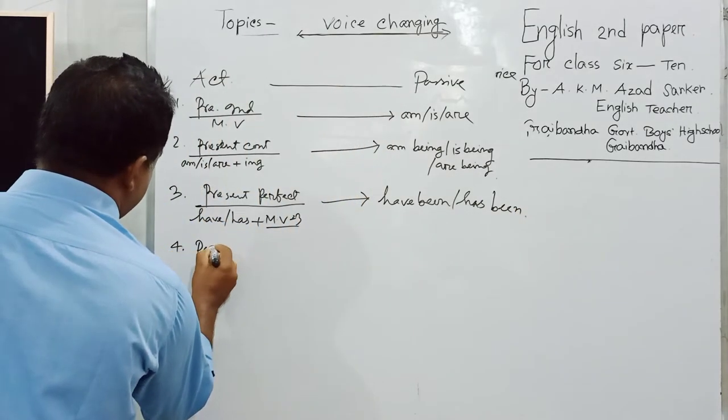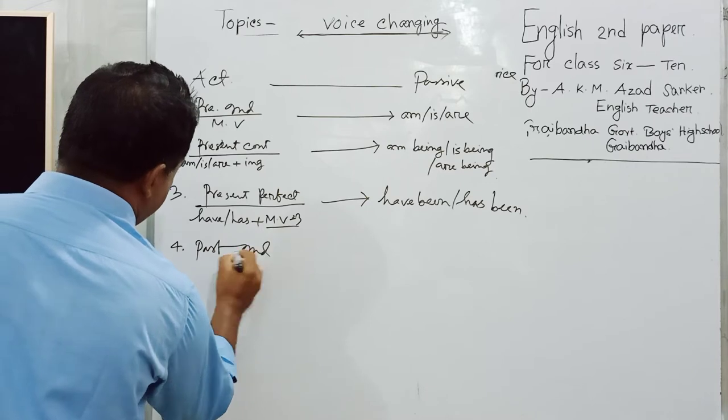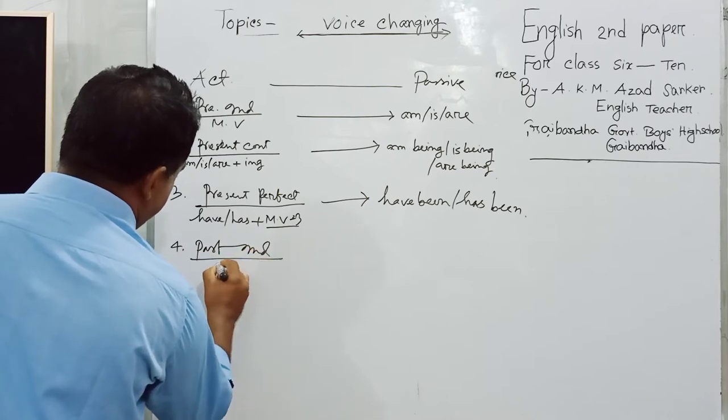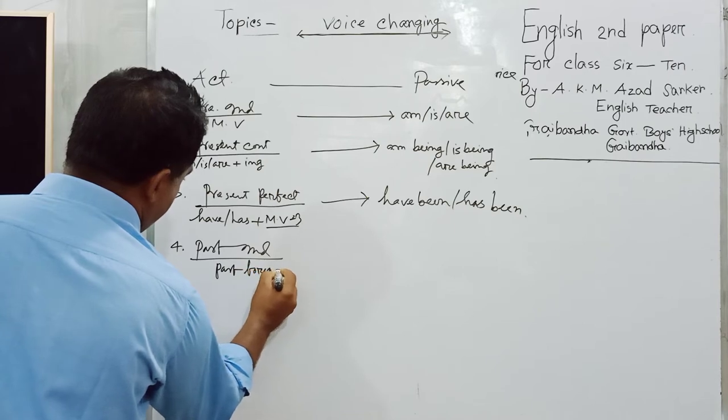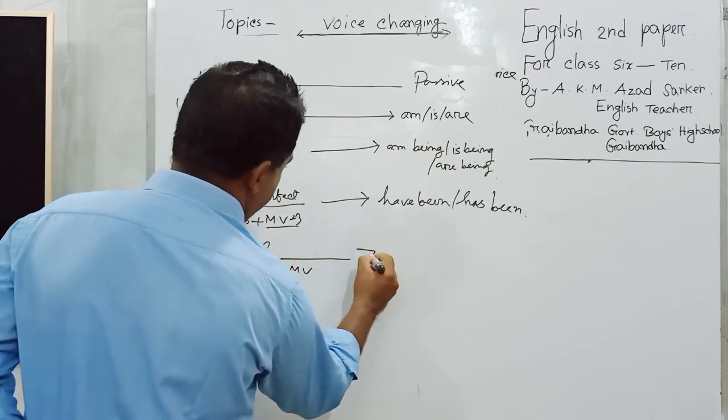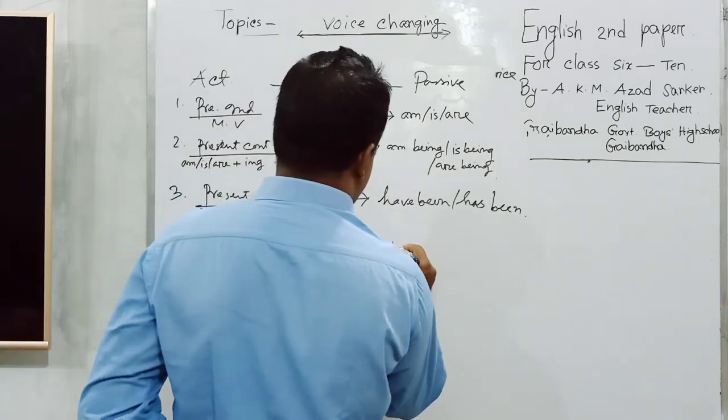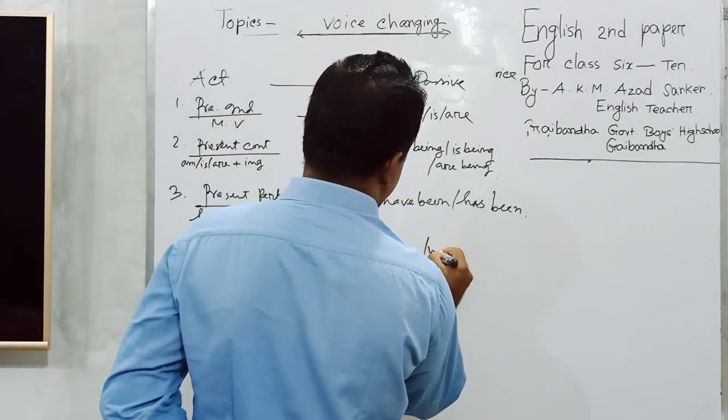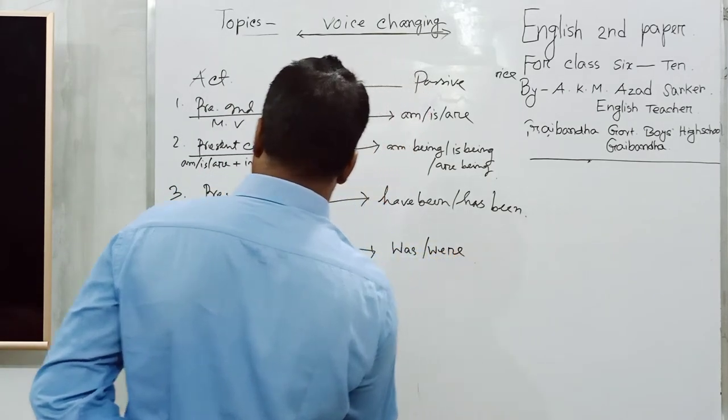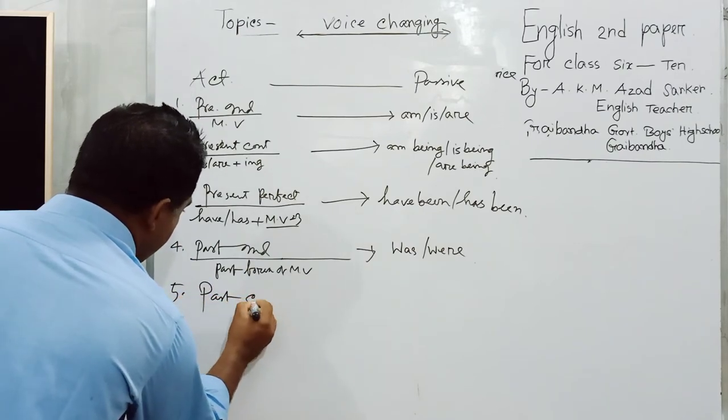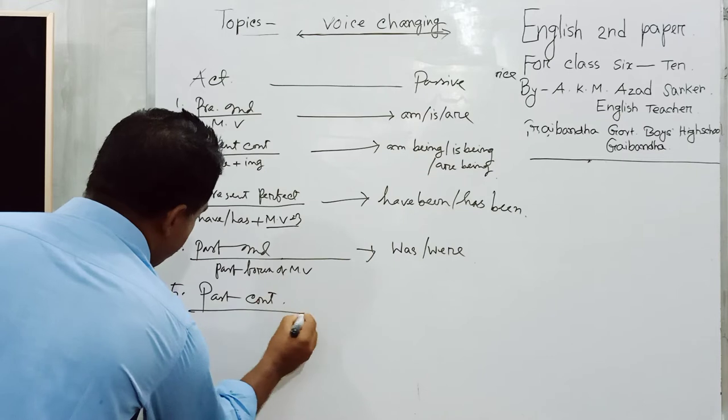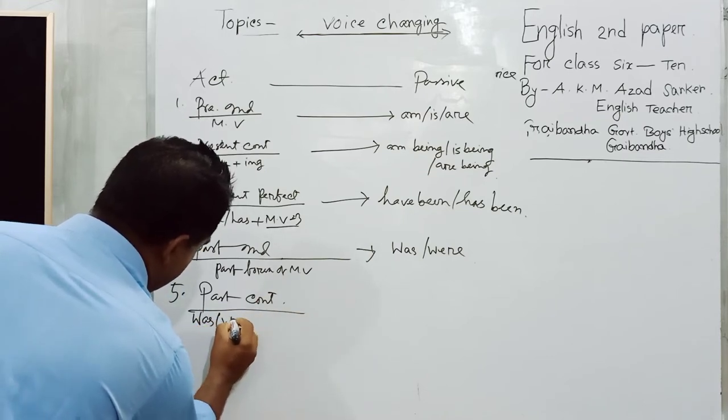Past indefinite: first form of main verb, becomes was or were. Past continuous: was or were plus -ing becomes was being or were being.